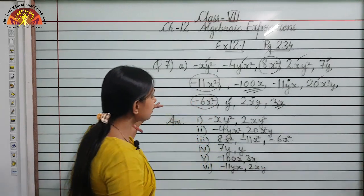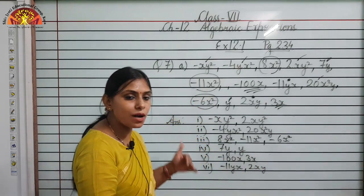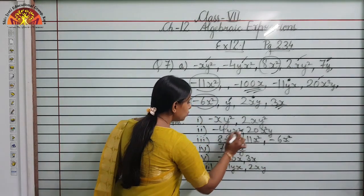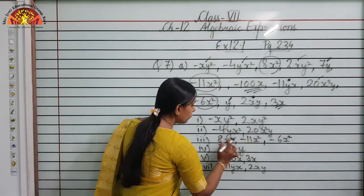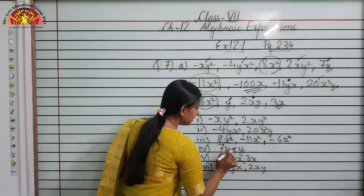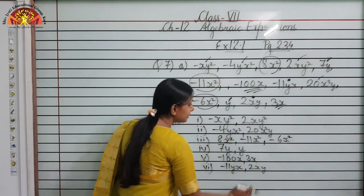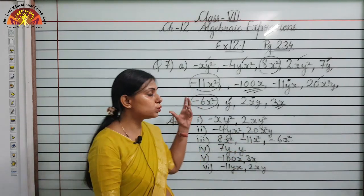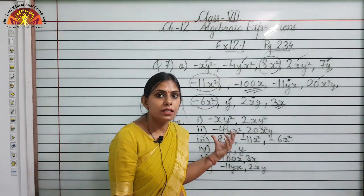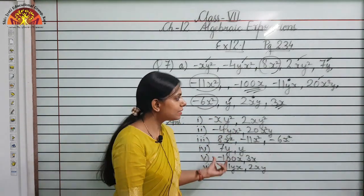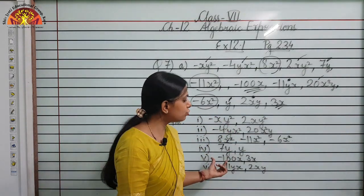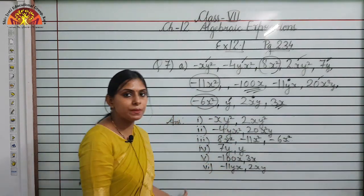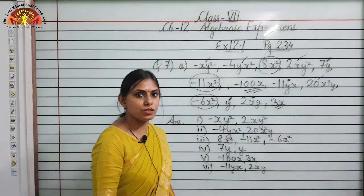We have accounted for all 13 terms across six groups, confirming the grouping is correct. This completes the answer for question number 7a.